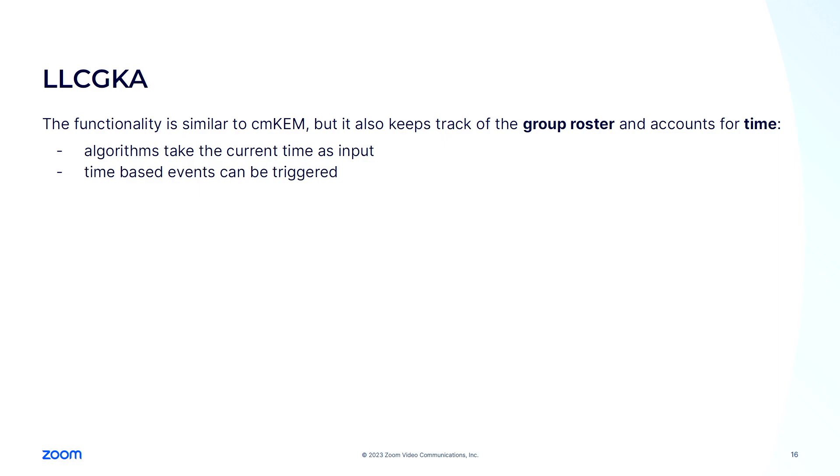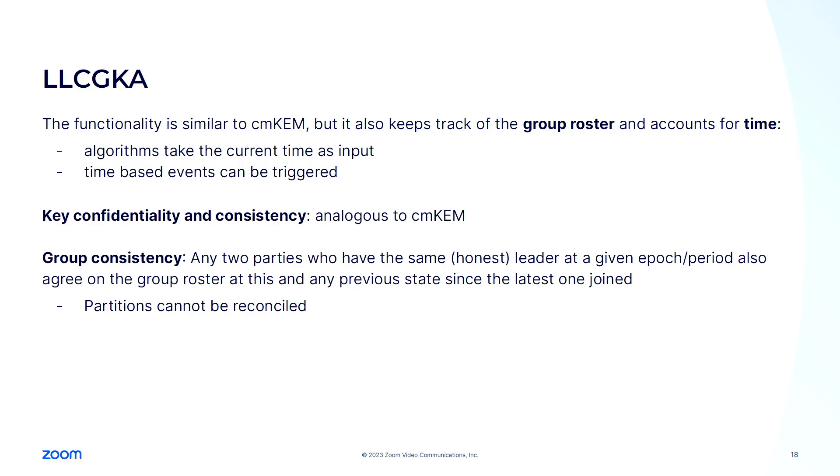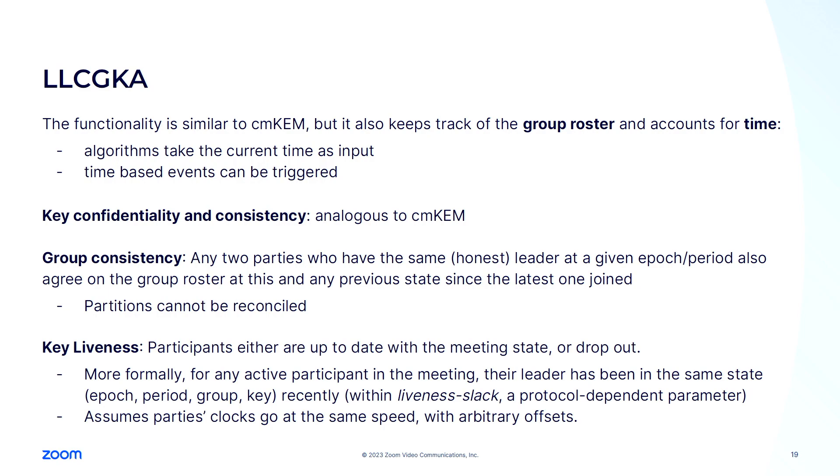So on top of this, we build this notion of leader-based continuous key agreement with liveness, and the functionality is similar to the one of the CMCAM that I just showed you, but in addition, participants keep track of the group roster, and this notion also accounts for time. So in the security formalization, we have the algorithm state, the current time as input, and there are also time-based events that can be triggered, and the adversary is the one advancing the clock. So the properties that we get from this notion are, again, key confidentiality and consistency, as before. In addition, we have this notion of group consistency, so the participants and two participants that are talking to the same honest leader will agree not only on the current state of the group, but also on the history of the group since the later of them joined the meeting. And so if an attacker partitions the meeting, then these partitions cannot be reconciled because the histories are different.